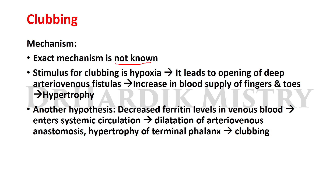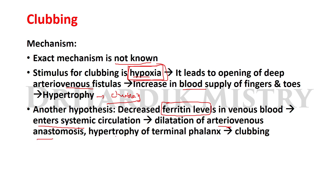The exact mechanism of clubbing is not known, but two mechanisms have been suggested. First, based on hypoxia: hypoxia leads to opening of deep arteriovenous fistulas, increasing blood supply to fingers and toes, leading to hypertrophy and development of clubbing. Second, based on ferritin levels: decreased ferritin in venous blood entering systemic circulation causes dilatation of arteriovenous anastomoses and hypertrophy of the terminal phalanx, causing clubbing.